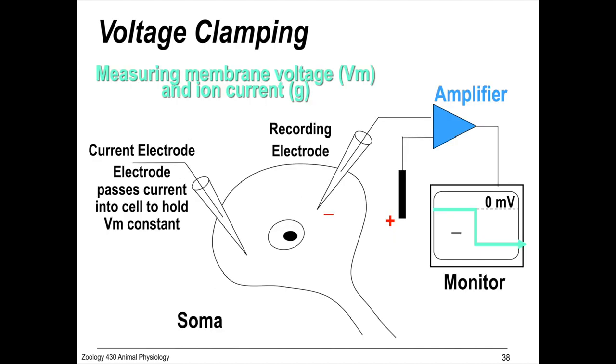And here's the experimental setup. This electrode here is actually passing current into the cell through a feedback loop to hold VM or membrane potential constant. And then we're recording, using the recording electrode to measure the ion current, or G, to measure changes in membrane permeability.